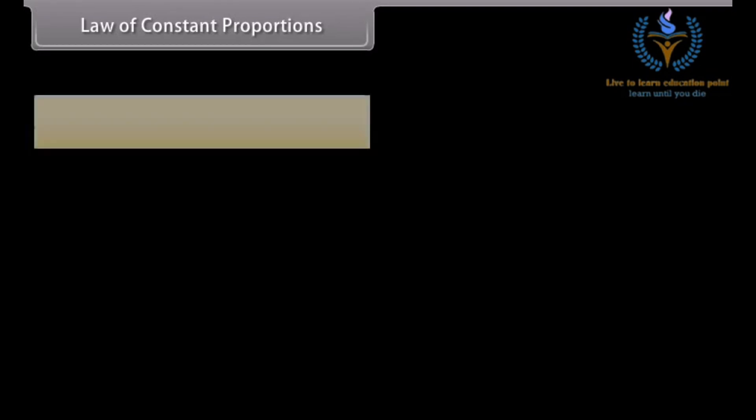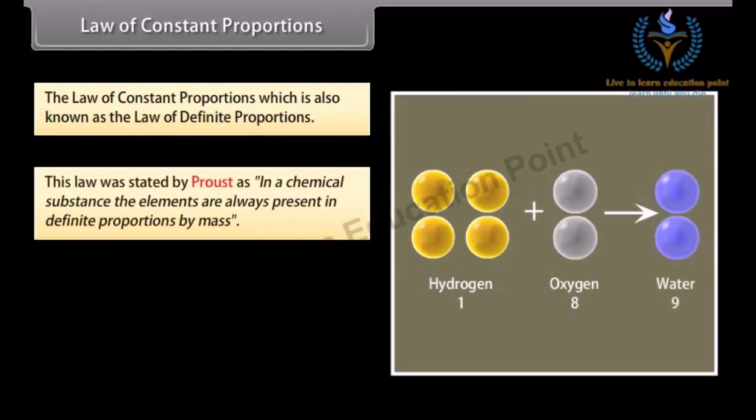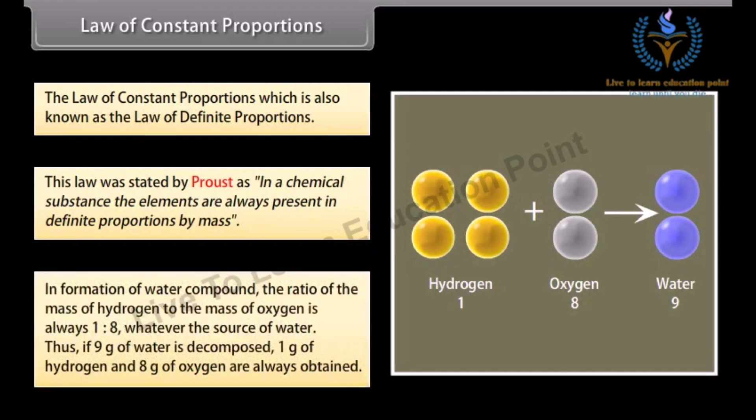Law of constant proportions, which is also known as the law of definite proportions. This law was stated by Proust as: in a chemical substance the elements are always present in definite proportions by mass. In formation of water compound, the ratio of the mass of hydrogen to the mass of oxygen is always 1 is to 8, whatever the source of water. Thus if 9 grams of water is decomposed, 1 gram of hydrogen and 8 grams of oxygen are always obtained.